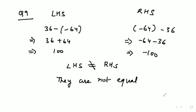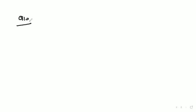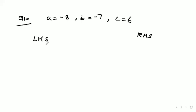Now have a full glance of question number 9 and come to question number 10. Question number 10 says: if a = -8, b = -7, c = 6, verify that (a + b) + c = a + (b + c). This is also a HOTS question. We are supposed to take a as -8, b as -7, and c as 6. We will write LHS and RHS accordingly.